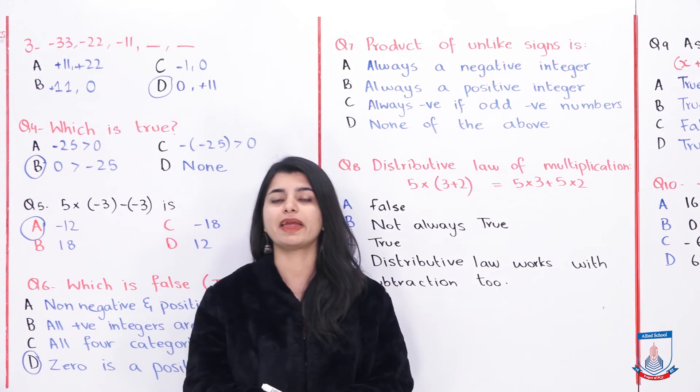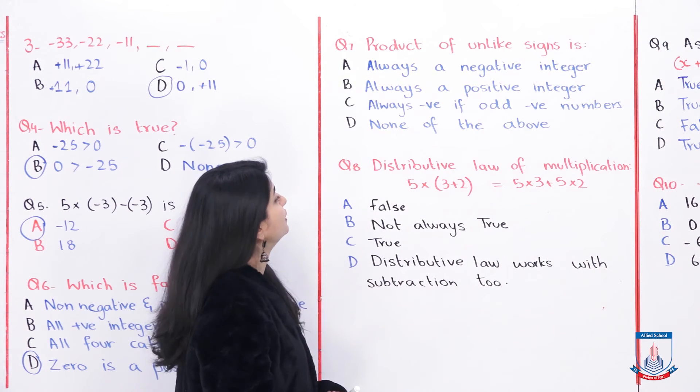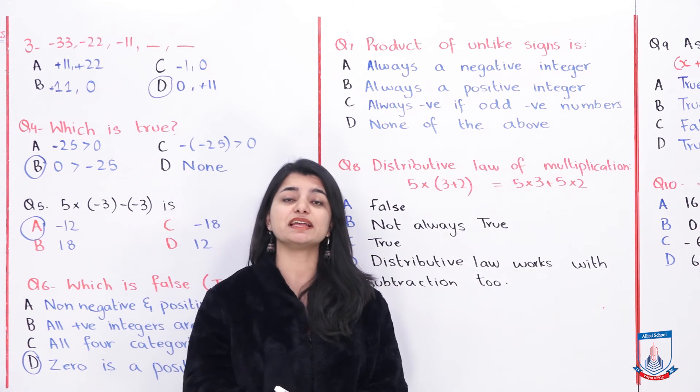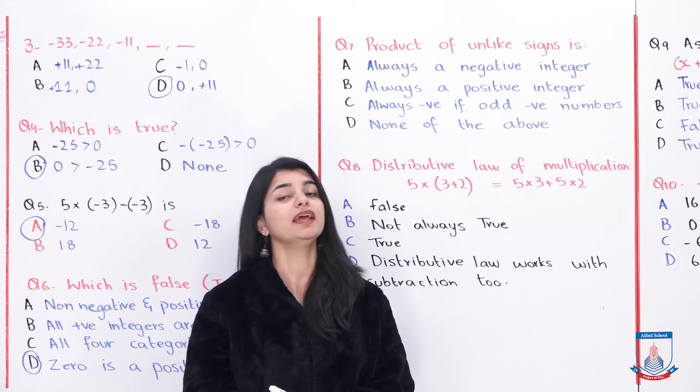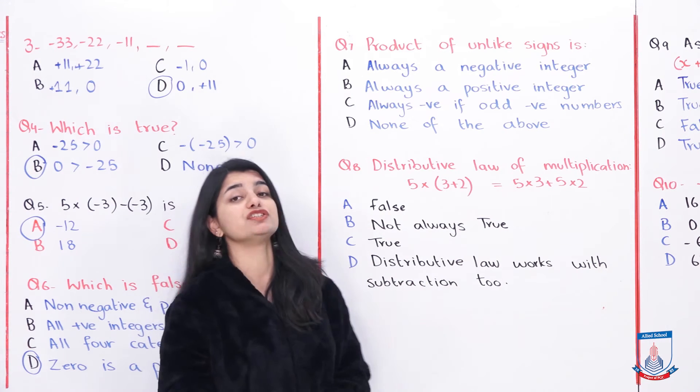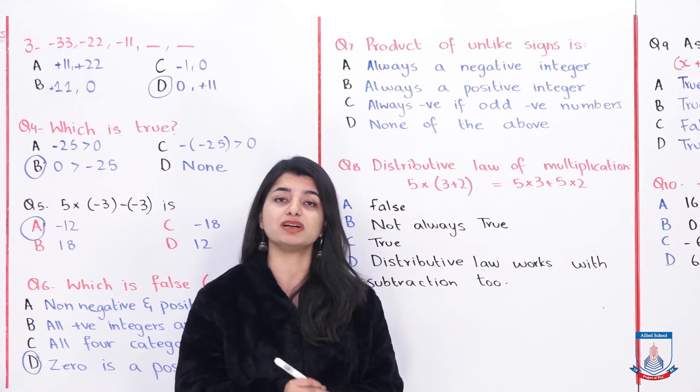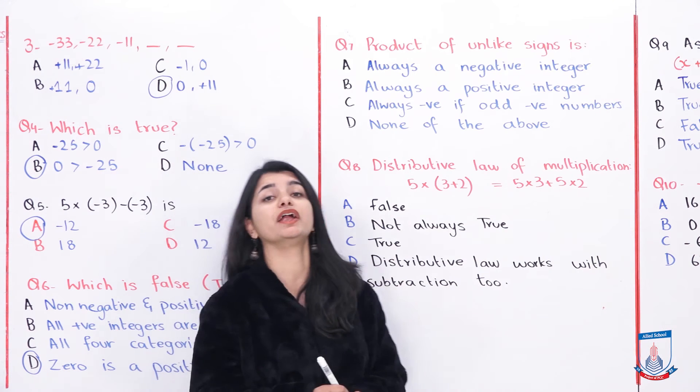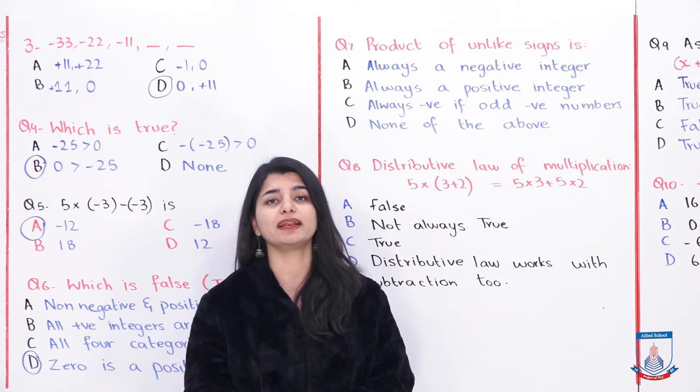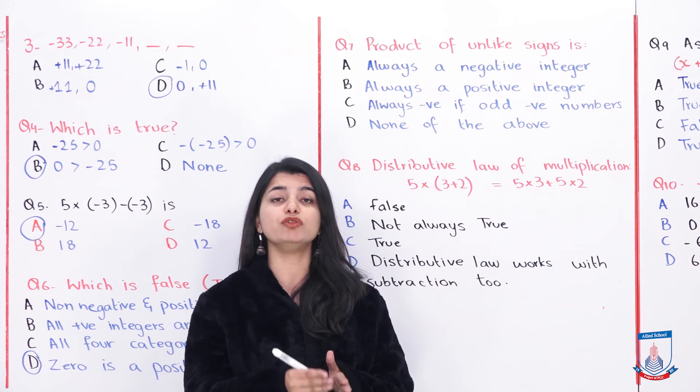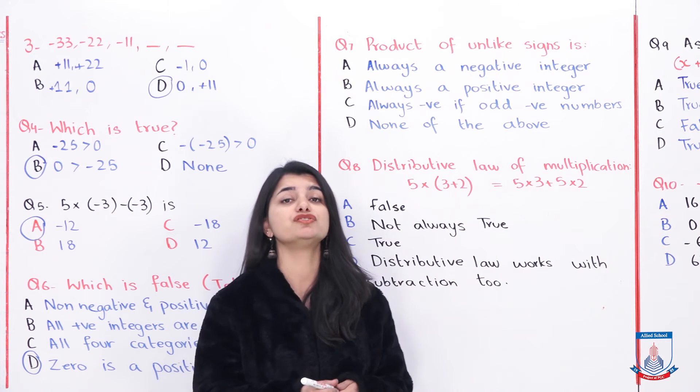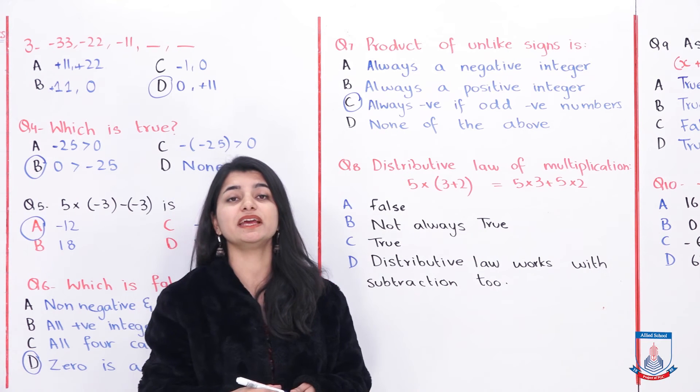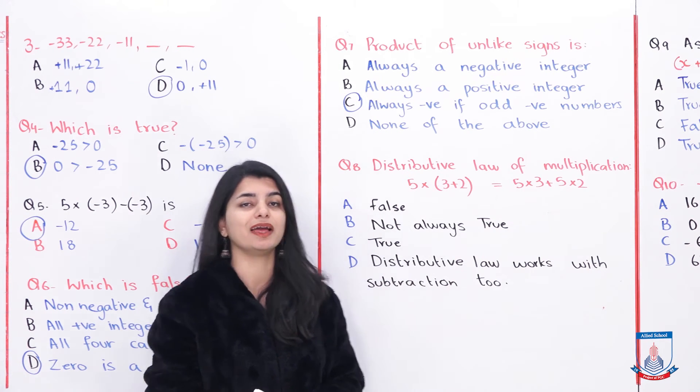MCQ number 7: product of unlike signs is A, always a negative integer. Is that true? Not quite true. Always a positive integer, that is also not confirmed. Always a negative integer if odd numbers are used with a negative sign - this option is correct. If you see, whenever negative sign is used with odd numbers and you add them, you will get a negative integer in your results. So option C is correct. Option D is none of the above, so we will ignore it.